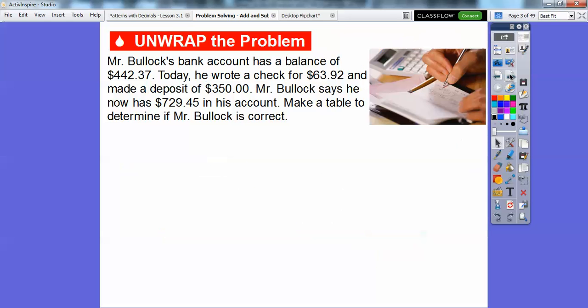Mr. Bullock's bank account has a balance of $442.37. Today he wrote a check for $63.92 and made a deposit of $350. The deposit is you put money in the bank. Mr. Bullock says he now has $729.45 in his account. Make a table to determine if Mr. Bullock is correct.